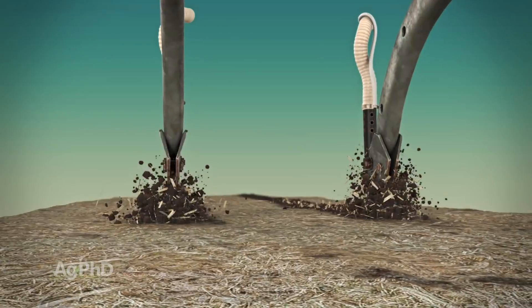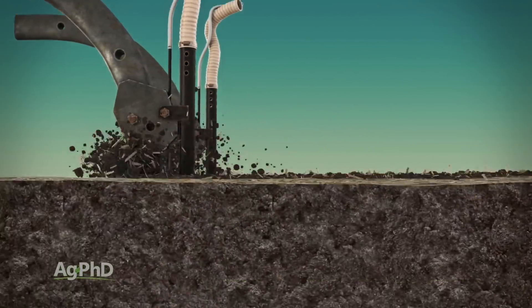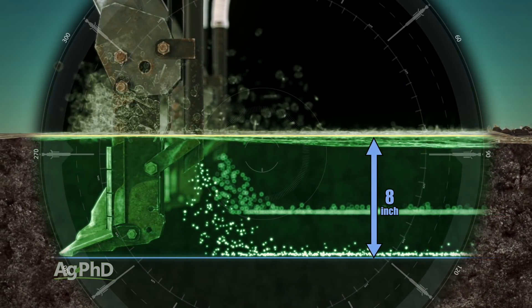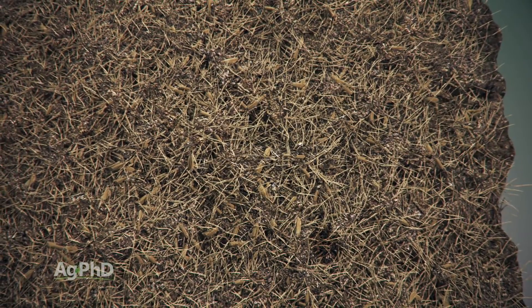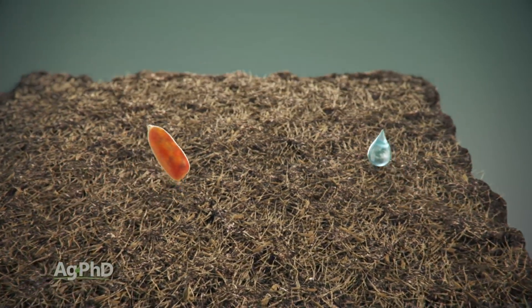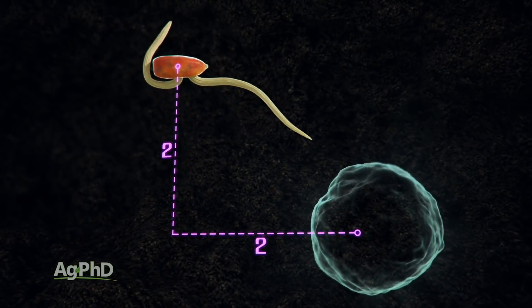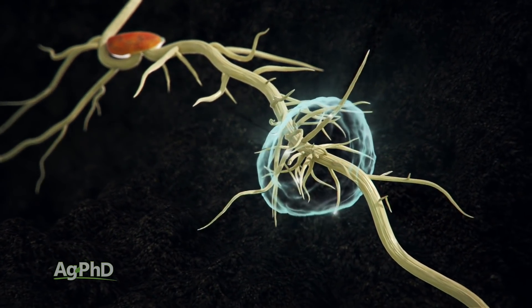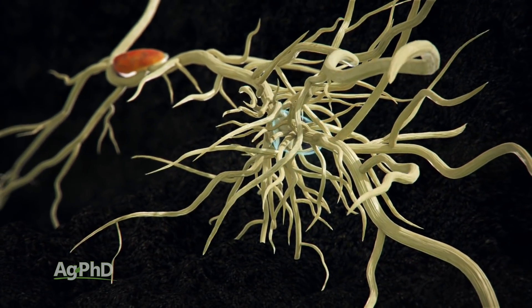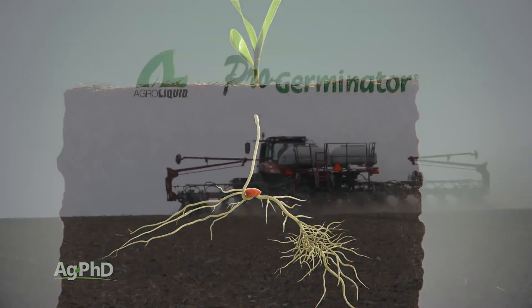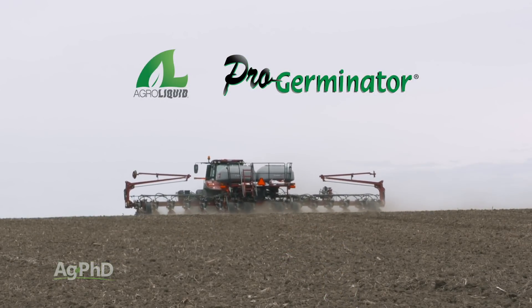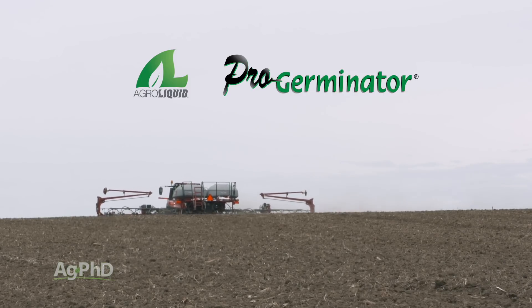Look at where you're going to place your phosphorus. Putting it in a concentrated band works well in higher pH soils and lower pH soils too — keep it where that root system is going to grow. On our farm we like to use strip-till, putting phosphorus down 8 or 10 inches deep directly below where we're going to plant the seed, so the root system grows right through that phosphorus band. Another commonly used approach is a 2x2 placement — just to the side of the row — so you know exactly where the seed is relative to the phosphorus without extra application steps. Products like ProGerminator are protected from tie-up and give you extended availability throughout the season.